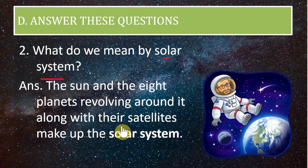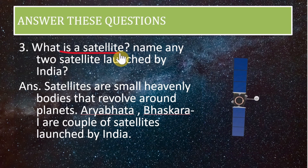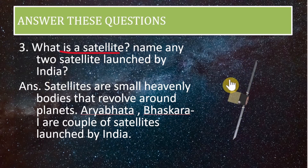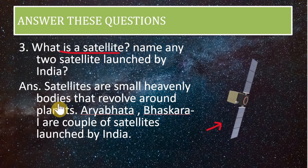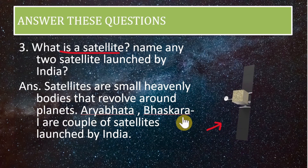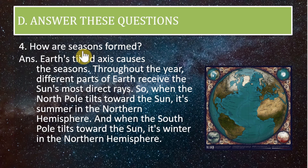Second question: what do we mean by the solar system? The sun and the eight planets revolving around it, along with their satellites, make up the solar system. Third question: what is a satellite? Name any two satellites launched by India. Satellites are small heavenly bodies that revolve around planets. Aryabhata and Bhaskar-1 are two satellites launched by India.